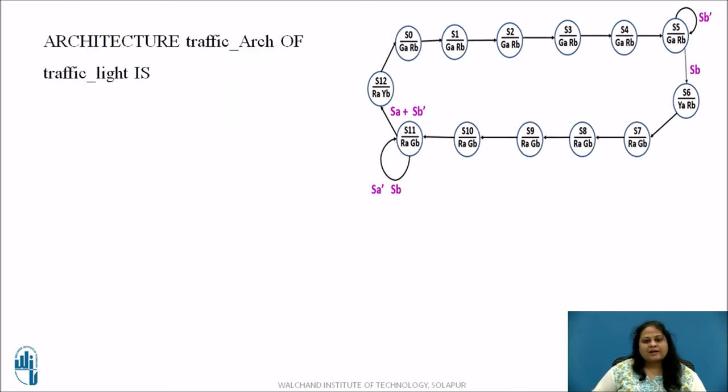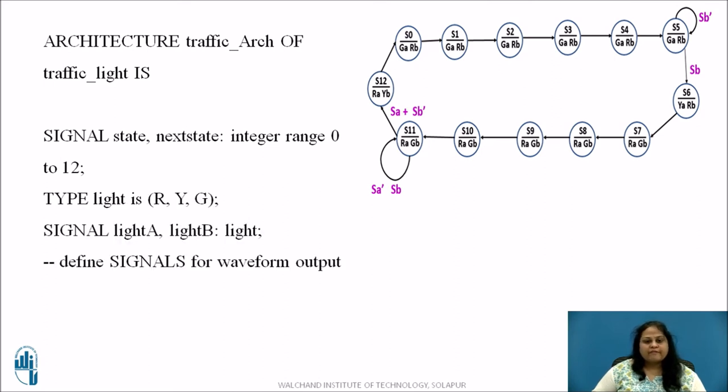Next is the architecture declaration as shown. Two signals are declared to represent the present and next state having integer value ranging from 0 to 12 for 12 states. User defined data type light is defined having value R, Y or G and two signals of type light are declared. This declaration is optional and it is done to make the interpretation of simulator output easy.